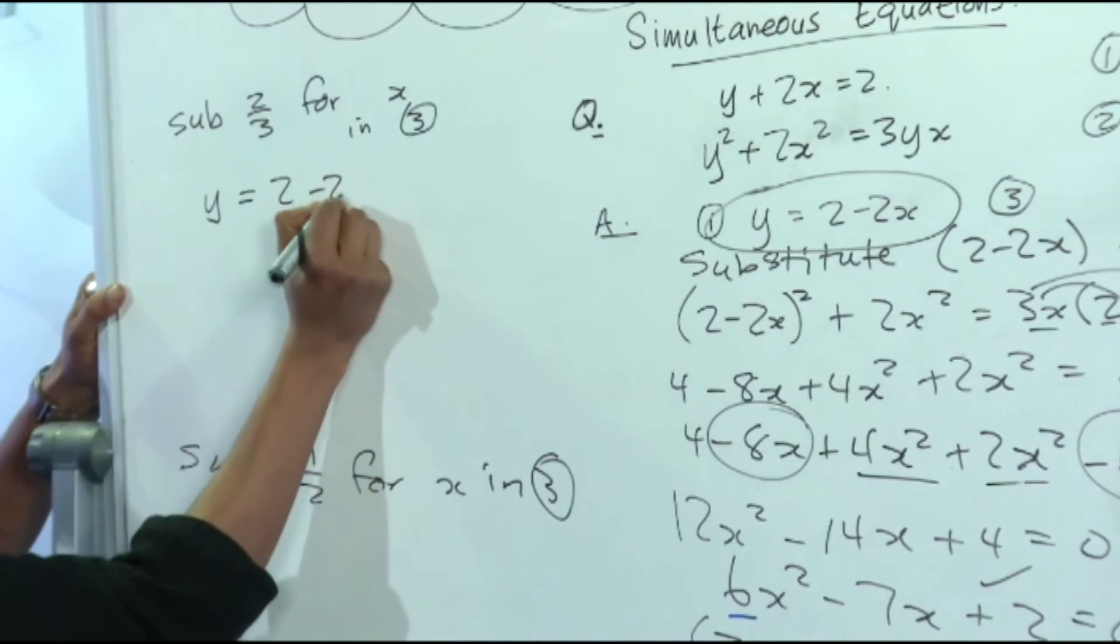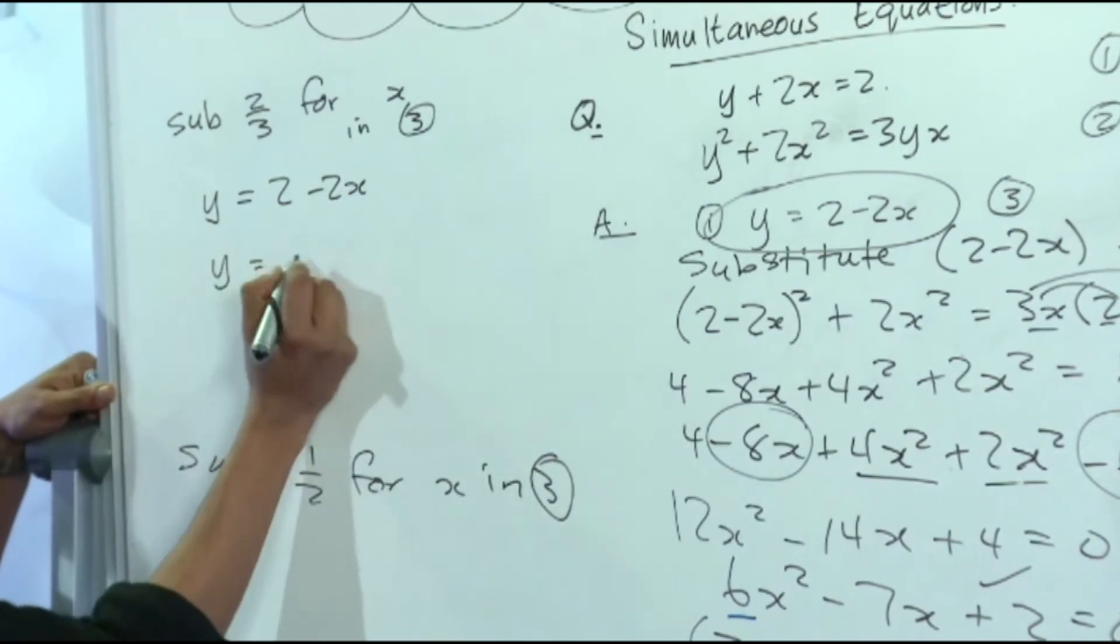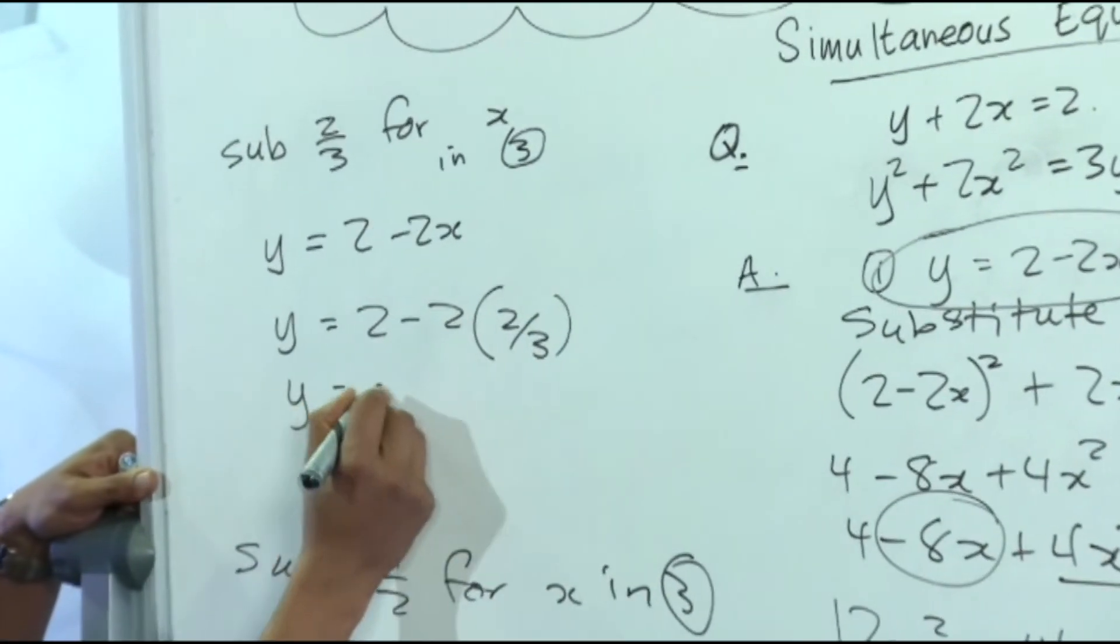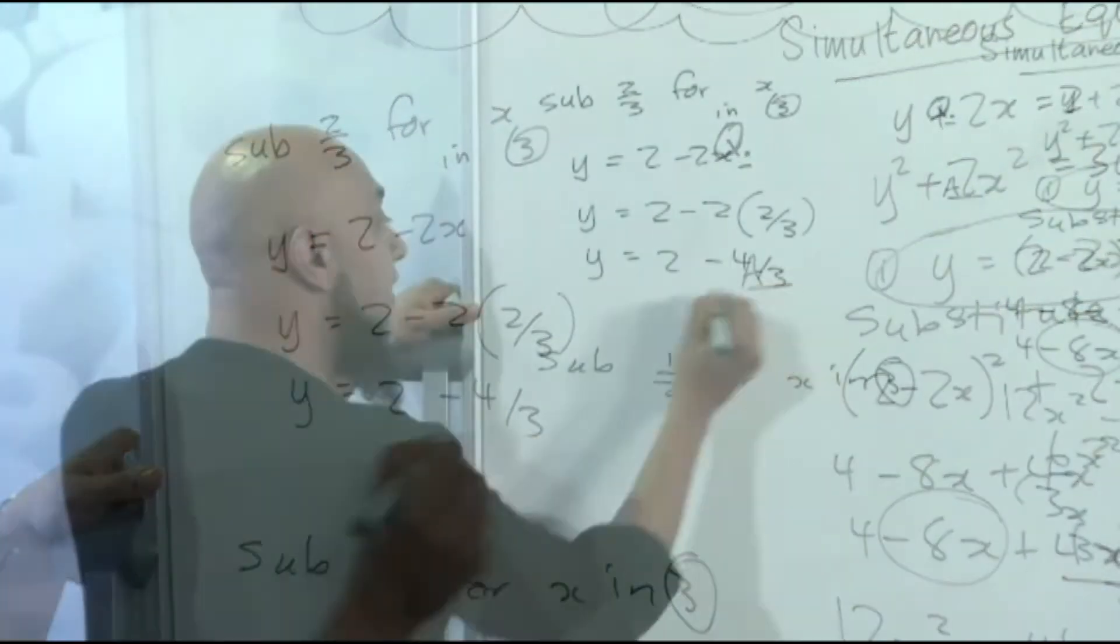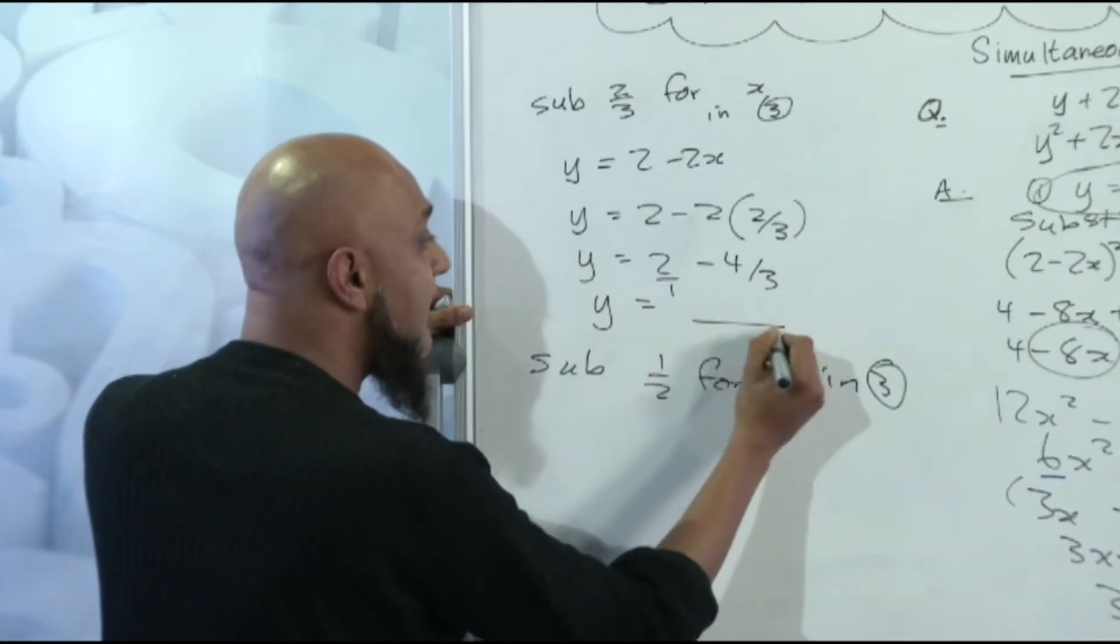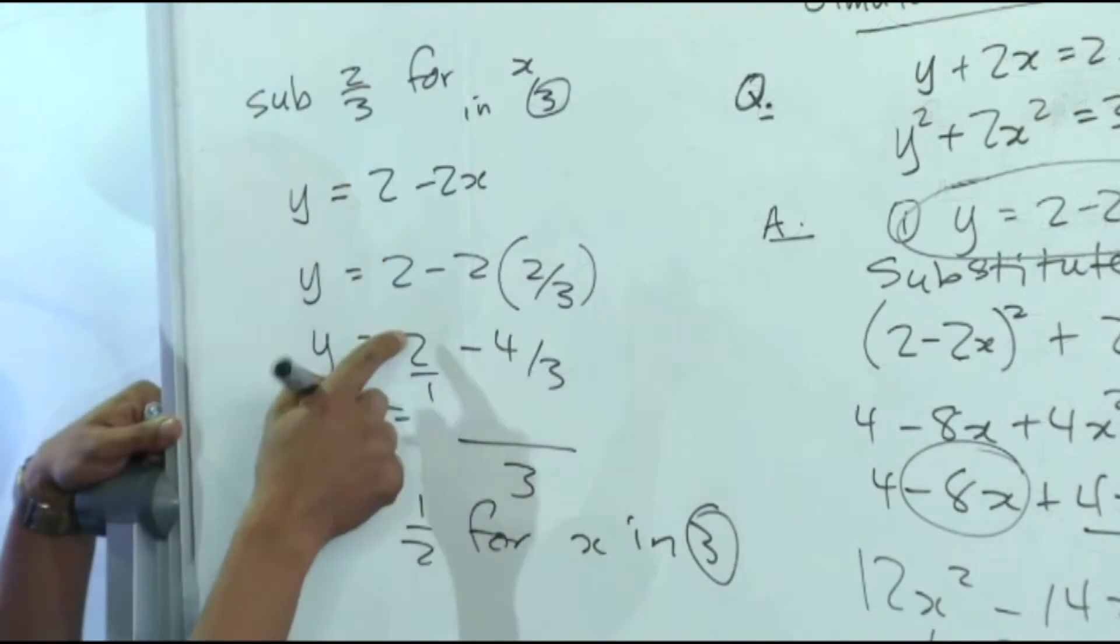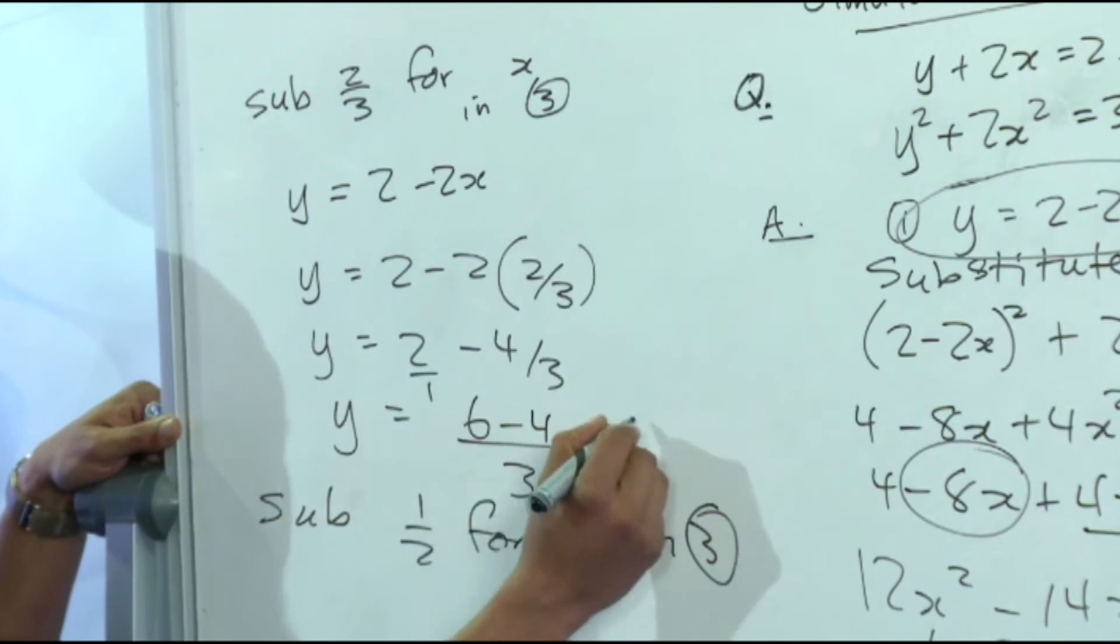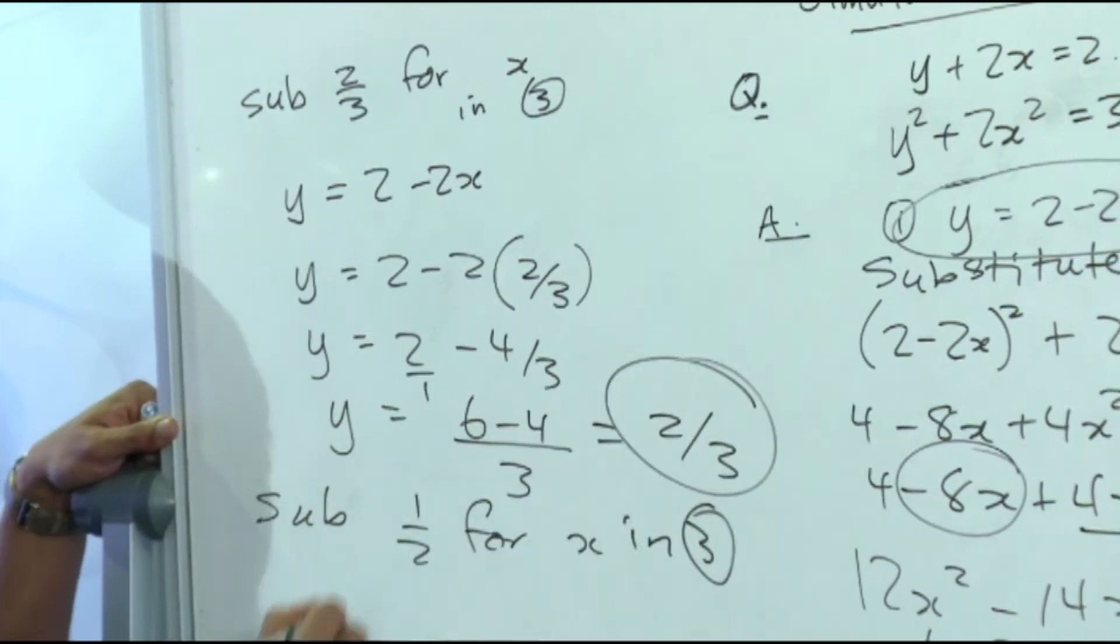So here goes. Y is equal to 2 minus 2x. Y is equal to 2 minus 2 into 2 over 3. So we've got y is equal to 2 minus 4 over 3. Y is equal to, your common denominator here is 3. 1 into 3, 3 times. 3 times 2 is 6. Minus 3 into 3 once, 1 times 4 is 4. 6 minus 4, 2 over 3. That's your first solution.